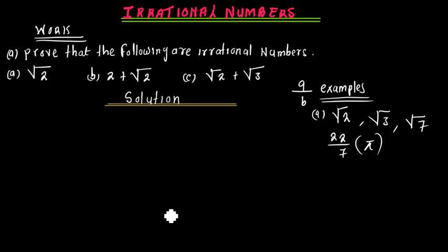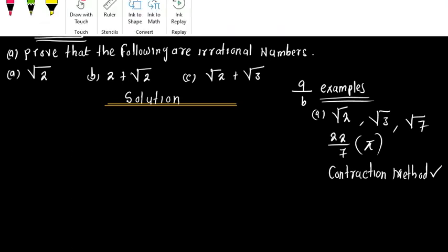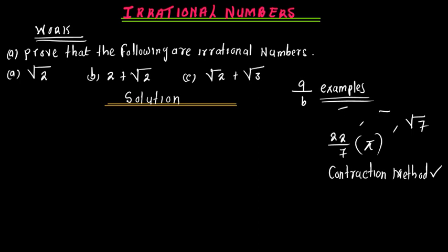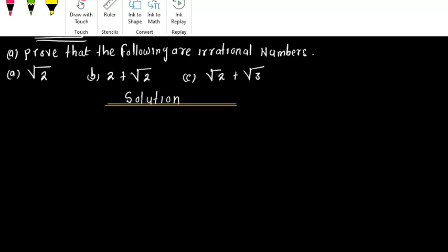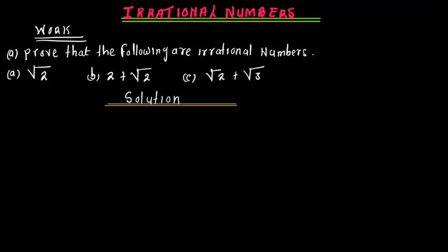To prove that a particular figure is an irrational number, we use what we call the contradiction method. To contradict is simply to argue, to make an argument. Now let's make a little bit of an argument and start with the first question, which happens to be the simplest.